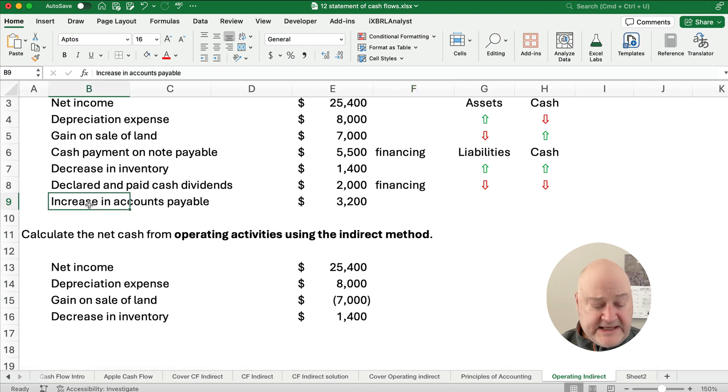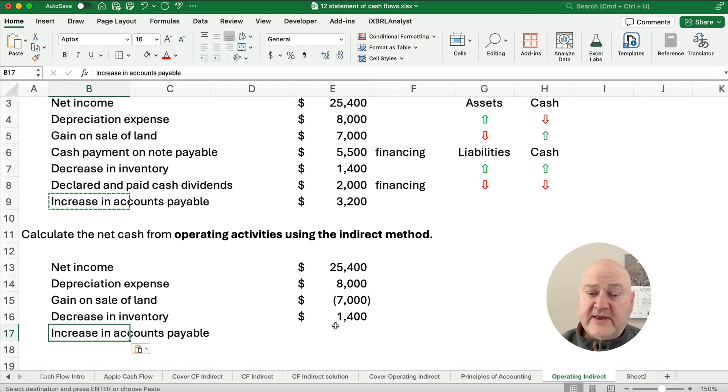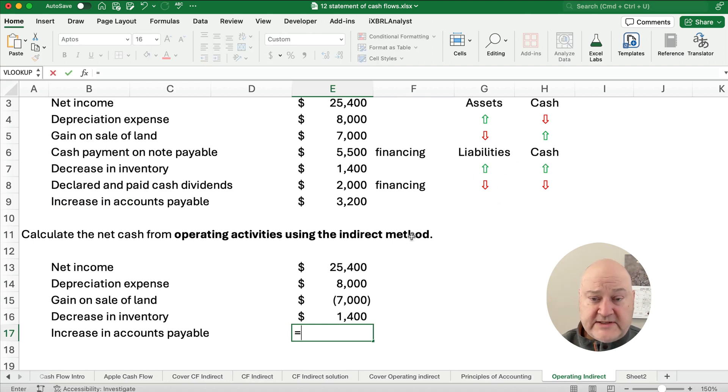The last thing we have, we have an increase in accounts payable. That's a current liability, so we want to hang on to that. So increase in accounts payable, if liabilities go up, cash goes up. So it's $3,200 is going to be a positive.